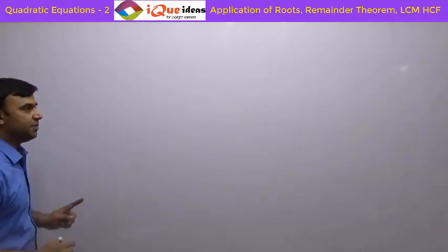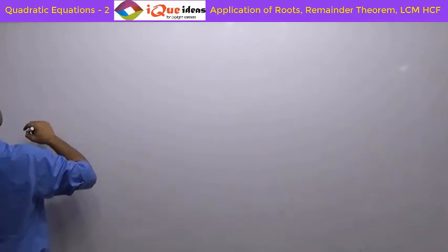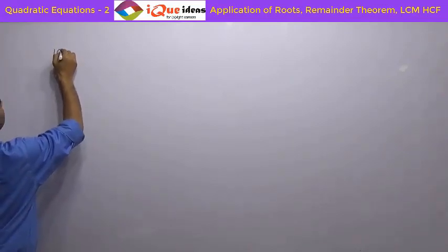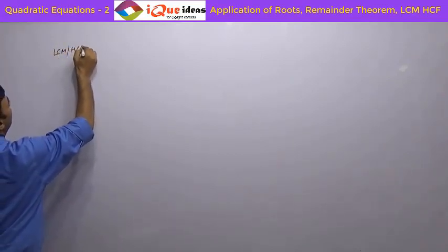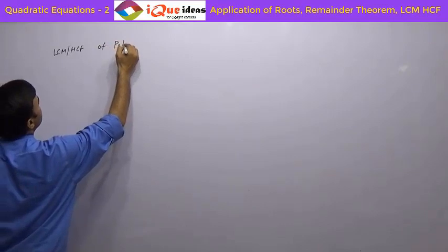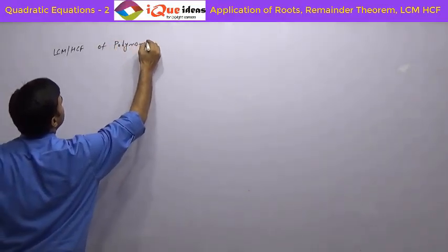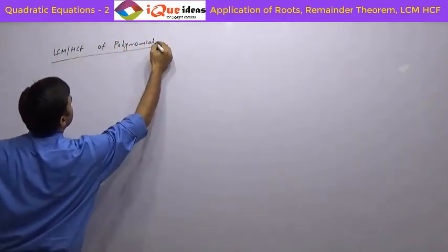Now we come to the last part of this chapter — LCM and HCF of polynomials. It is very simple and is based on factorization.